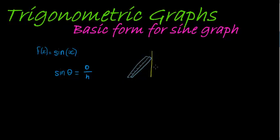The sine function gives us the height that the ladder reaches on the wall — that height is the opposite side length. If theta is our angle, the opposite is that height, and the ladder's length is our hypotenuse. So sine of theta equals the opposite over the hypotenuse — it's a ratio comparing the height we can reach with the ladder to the length of the ladder.